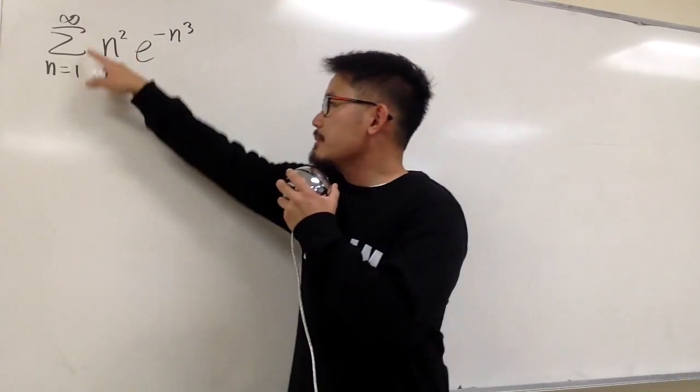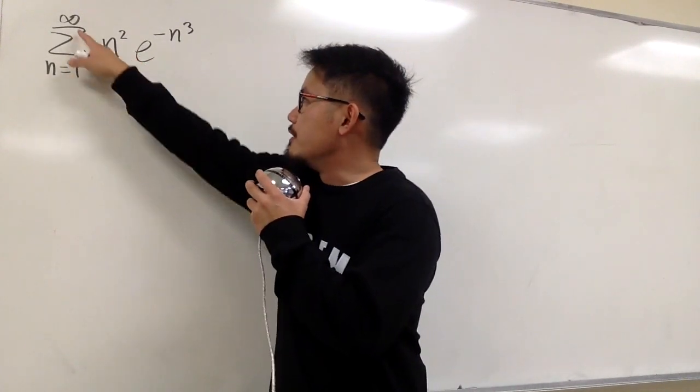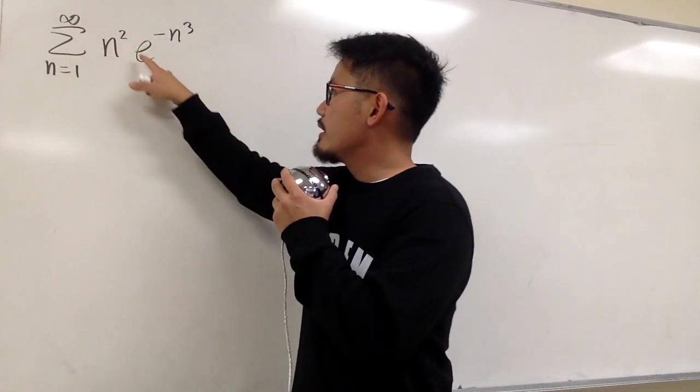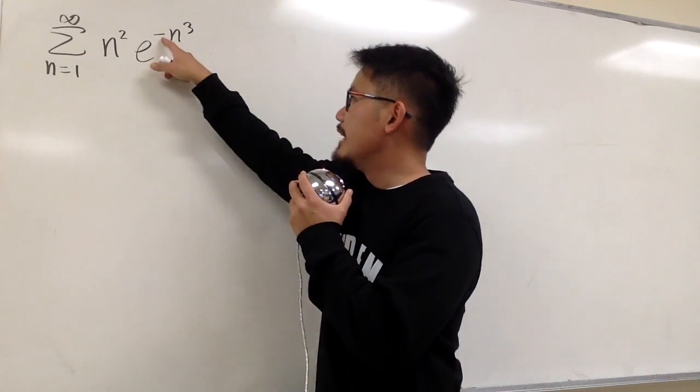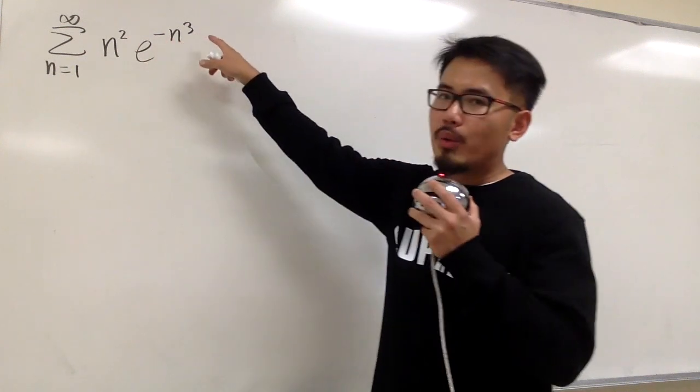Converge or diverge? Sigma when n goes from 1 to infinity of n squared times e to the negative n to the third power.